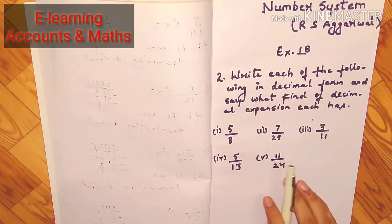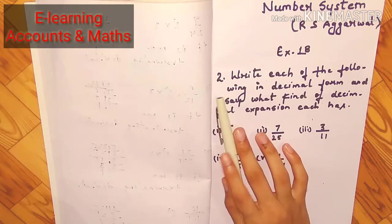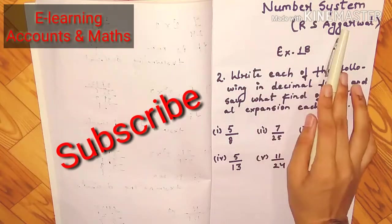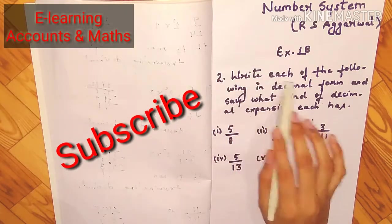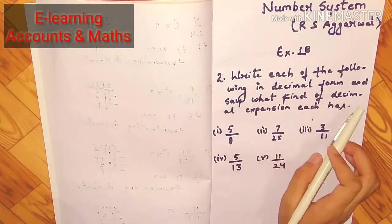Hello students, welcome back to my channel e-learning accounts and maths. So let's do question number two of exercise 1b, that is number system. The question is write each of the following in decimal form and what kind of decimal expansion each has.